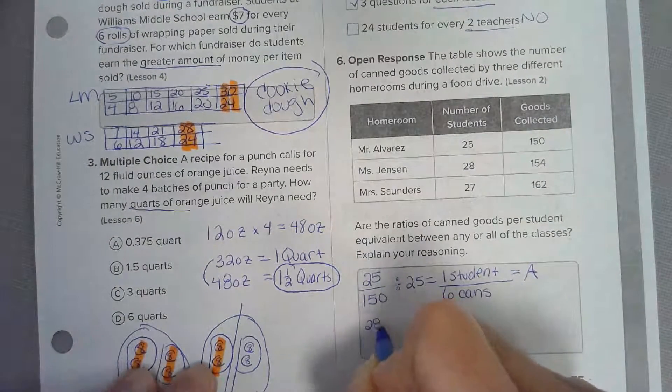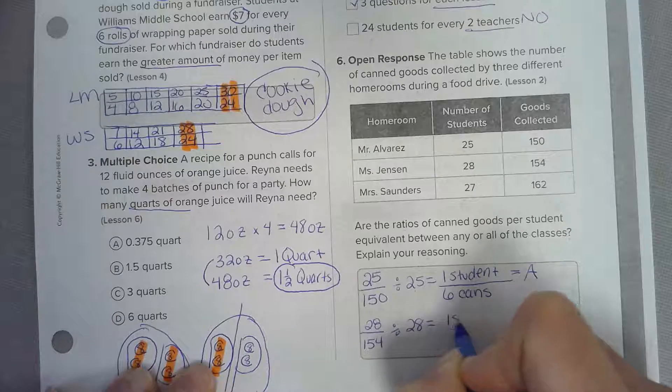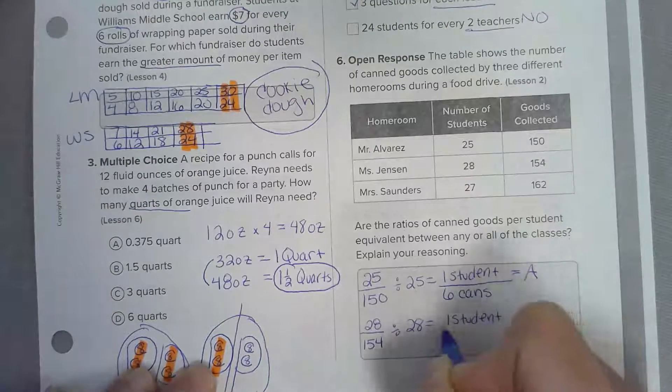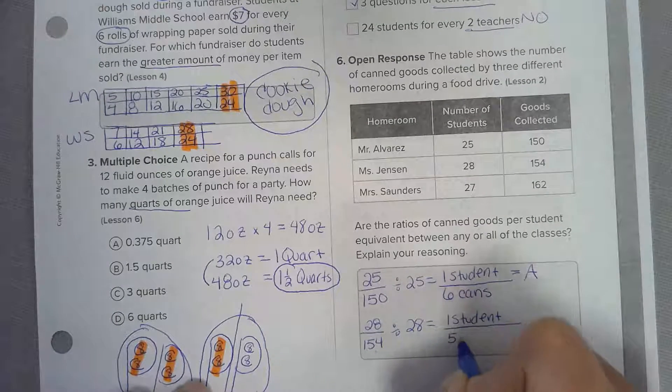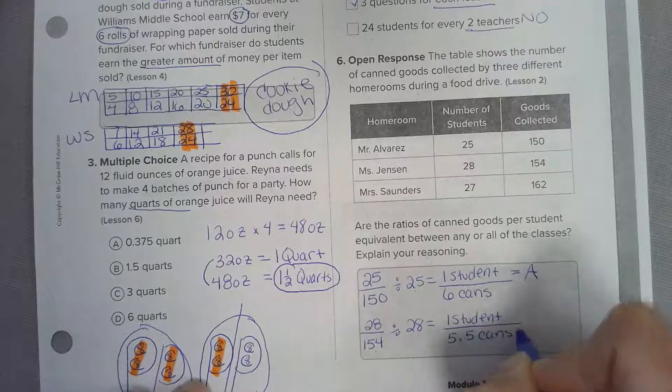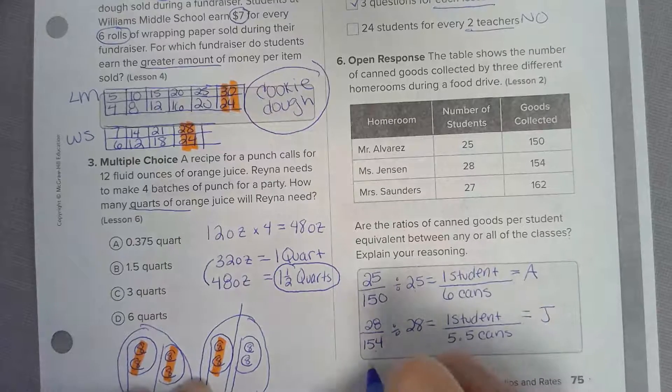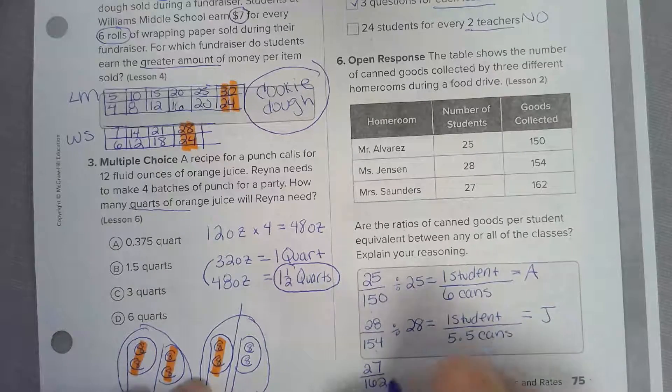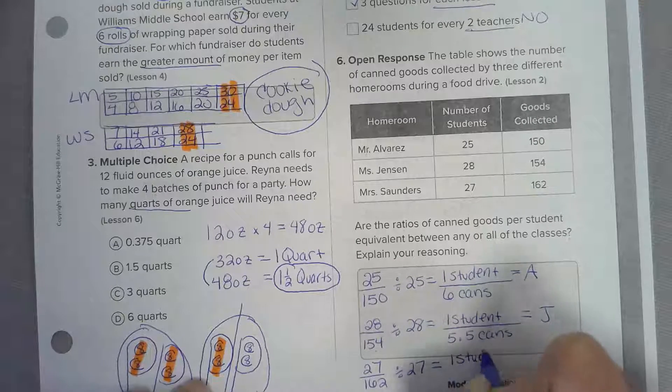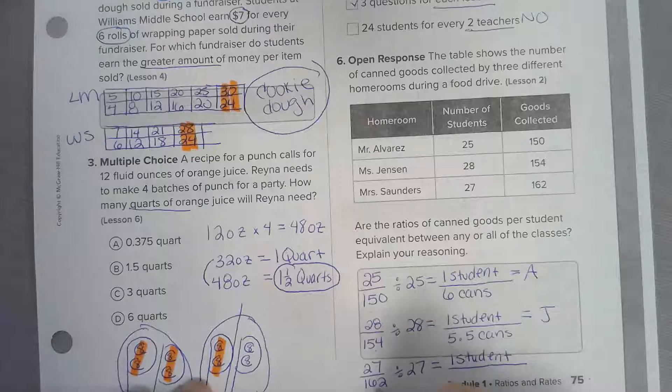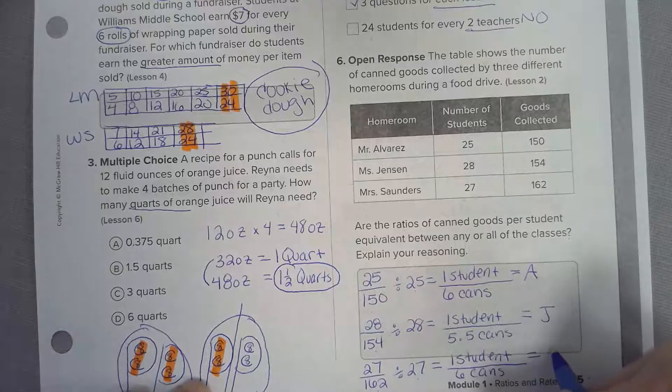The next one: twenty-eight over one fifty-four. I'm dividing by twenty-eight so I get one student. One fifty-four divided by twenty-eight is five point five cans - that is Mr. Jensen. The last one: twenty-seven over one sixty-two. I divide by twenty-seven to get one student. One sixty-two divided by twenty-seven is six cans - Mrs. S.